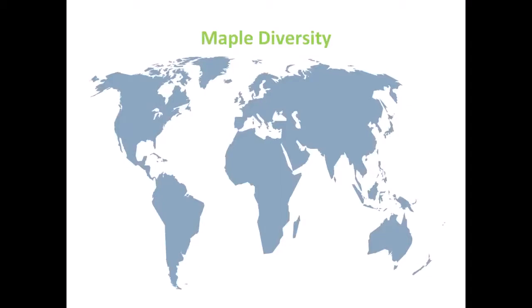Before we talk about Amelanchier diversity, we're in Canada so we're going to talk a little bit about maple diversity. I can't actually hear any of you right now — normally I would ask if you had any guesses of how many species of maple we actually have here in Canada. Being Canada, with the maple leaf on the Canadian flag, we probably have quite a few. And we do — we have about 11 of them.